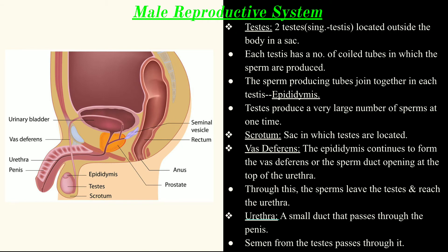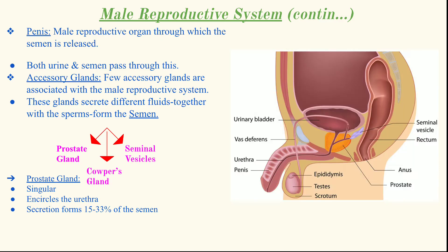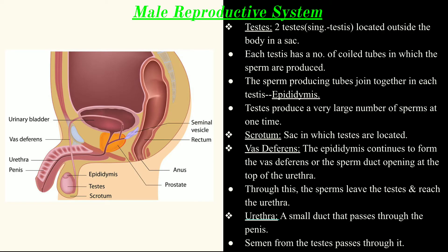Next, we come to the male reproductive system. The reproductive organs of the male are: testis, scrotum, vas deferens, urethra, penis, and the accessory glands. The testes are two in number — the plural is testes and the singular is testis. They are located outside the body in a sac known as the scrotum.